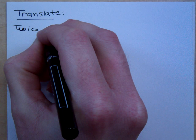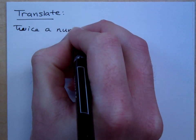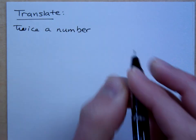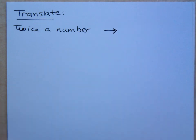If I say twice a number, how does that translate? It means two times a number, right?